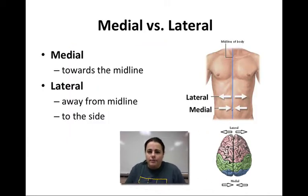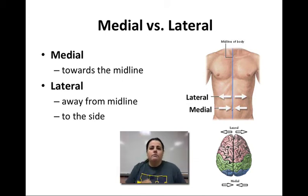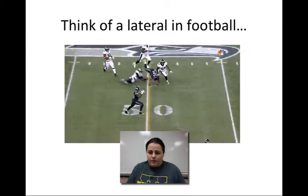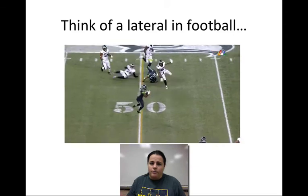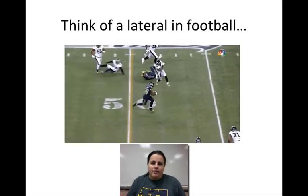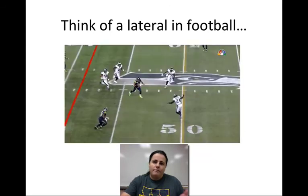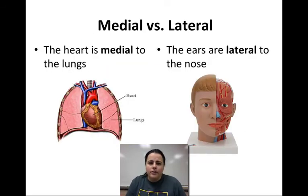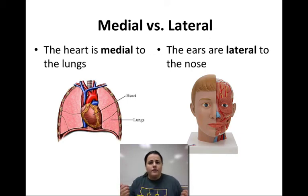Next are medial and lateral. Medial means middle — the midline of the body. If you draw a line right down the middle, towards that line is medial, and moving away from the line is lateral. Lateral means off to the side — like in football, a lateral is a toss to the side. The heart is medial to the lungs because the lungs are off to the side. The ears are lateral to the nose because the ears are off to the side and the nose is in the midline.